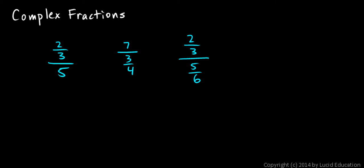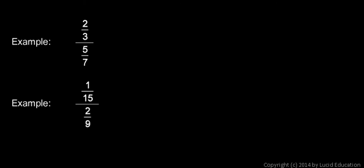Now I'll show you how to simplify these by working through a couple of examples. In this first one, we have 2 thirds over 5 sevenths. Just remember that the fraction bar means division. So 2 thirds over 5 sevenths is the same as 2 thirds divided by 5 sevenths.